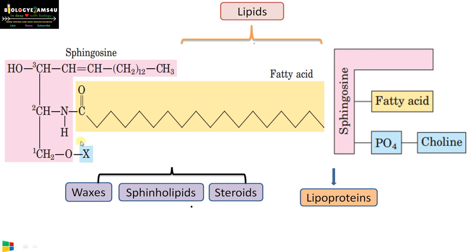In the case of sphingolipids, the X group can vary. If it is phosphocholine, then it is called sphingomyelin. The major difference from glycerides is that instead of a glycerol backbone, there is a sphingosine backbone.